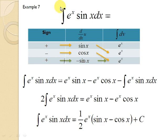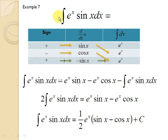Example 7 is the integration of e^x sin(x) dx. We have an exponential function and a trigonometric function, so our u will be the trigonometric function and our dv will be the exponential function.